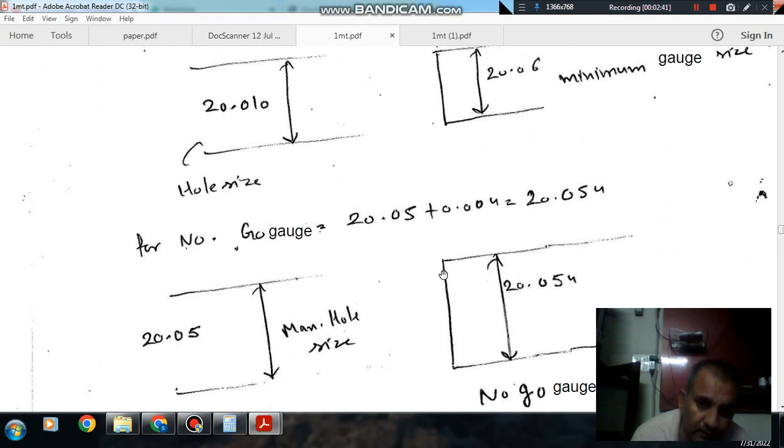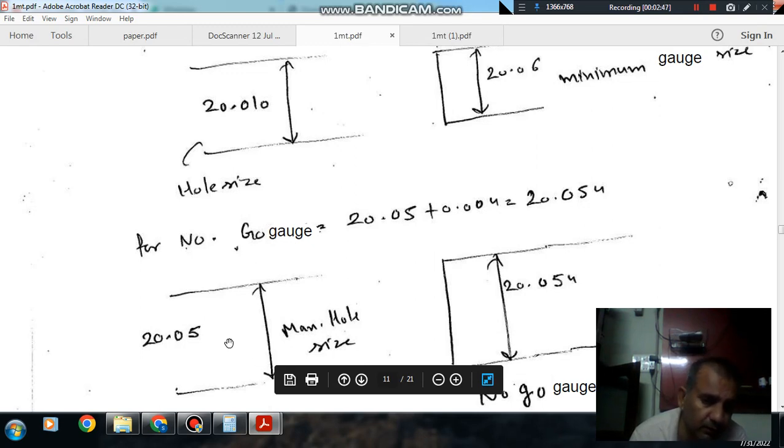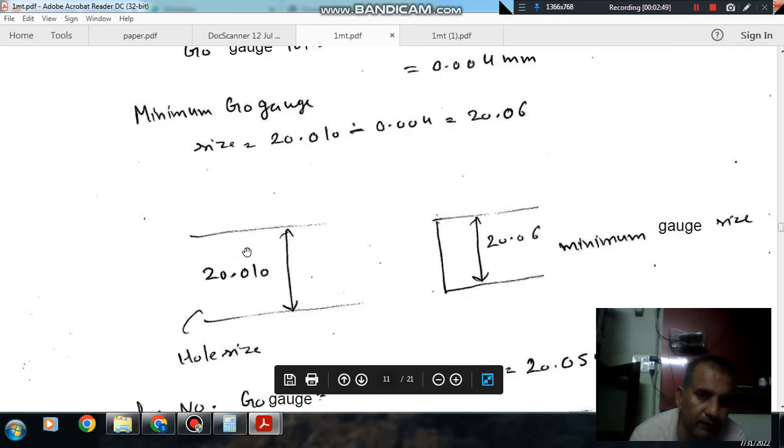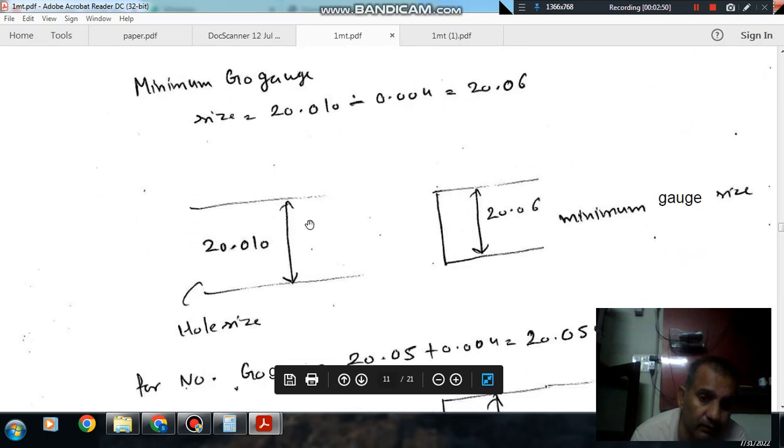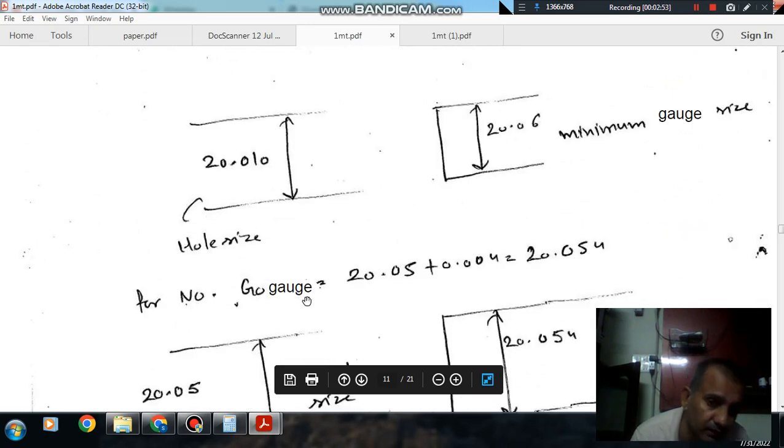Maximum size of Go gauge, because this is your size. Maximum size of hole is 20.05. Now we have designed Go gauge.